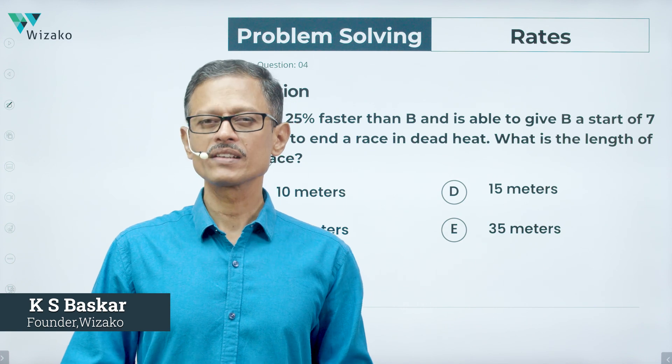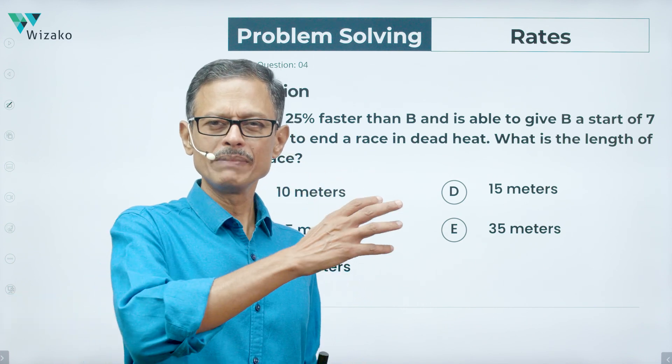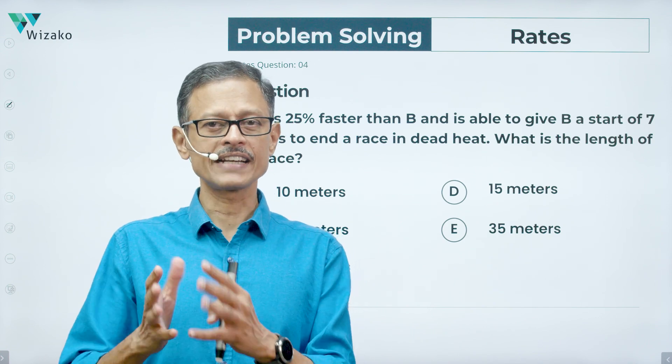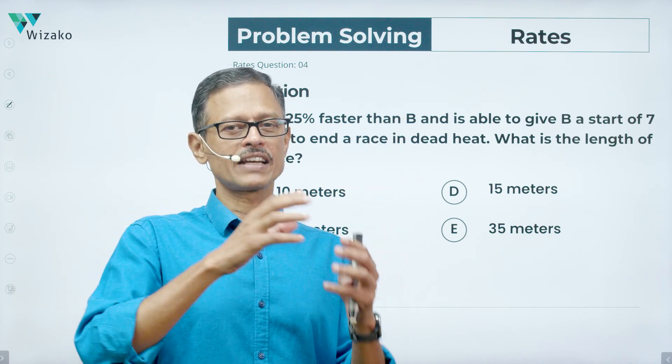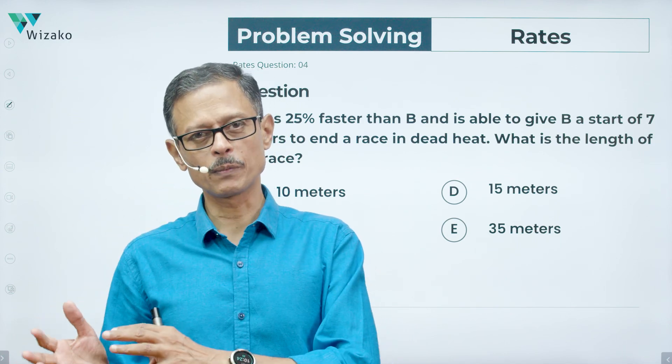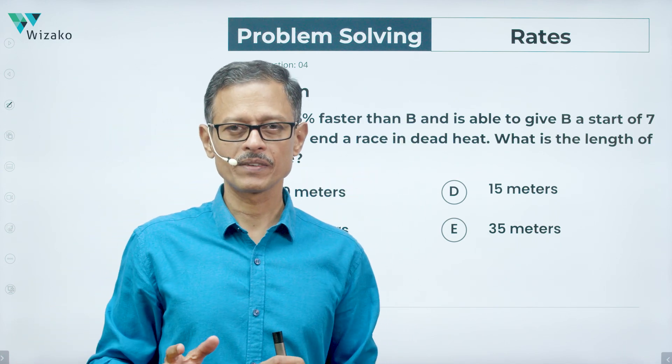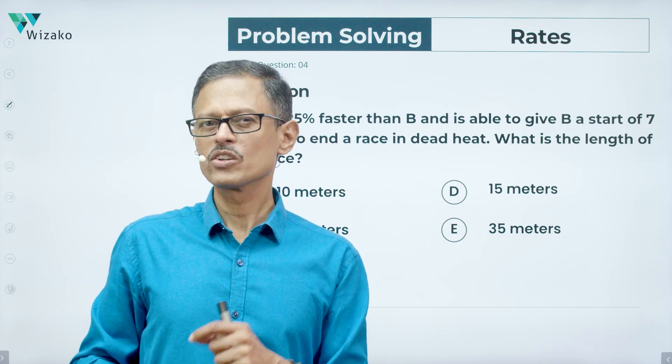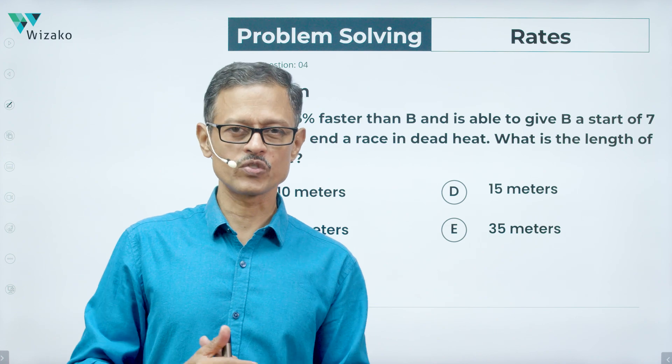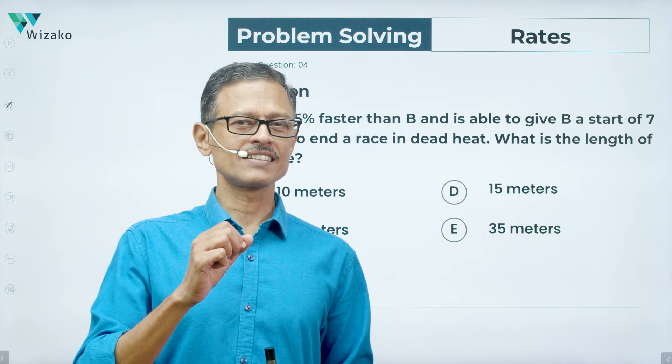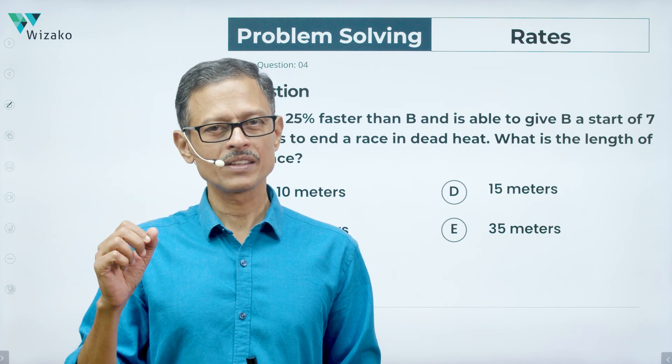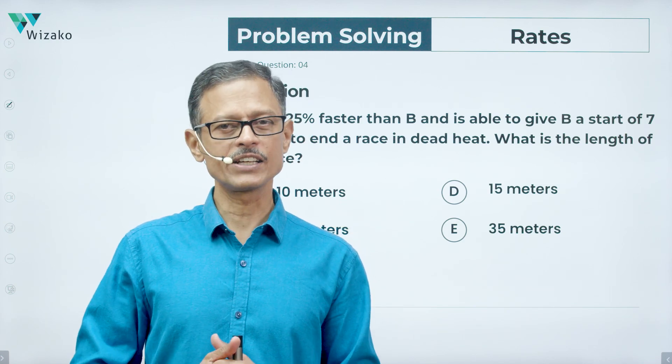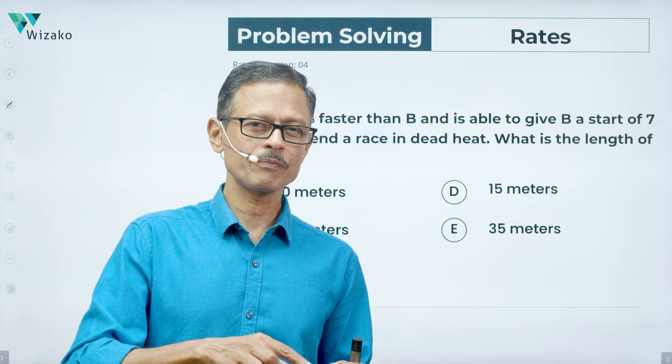It's a medium difficulty question, but the concept tested is basically ratio proportion. Though it's a speed distance question, we're actually going to be using the concept of ratio proportion once you've decoded what is given in the question. At the end of solving this question, we have a bonus question for you to solve. Before we get started, if you haven't subscribed to our channel, please consider subscribing and turning on notifications. Like this video and share it with your friends.